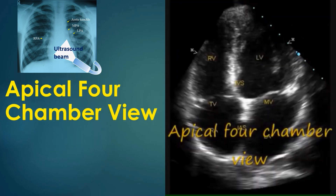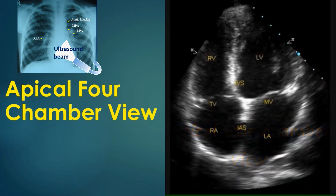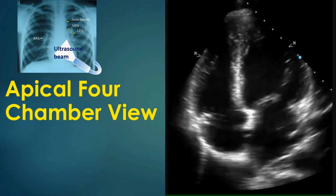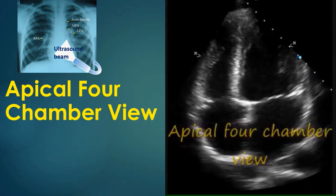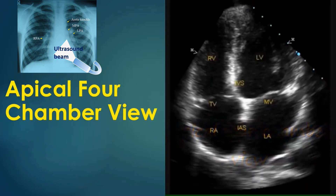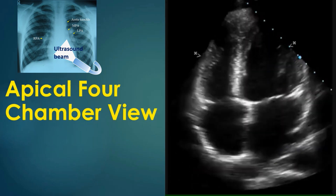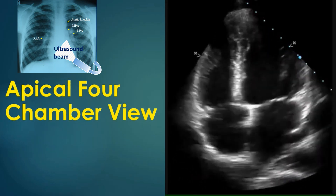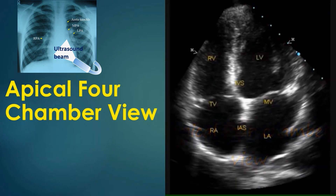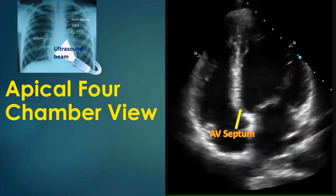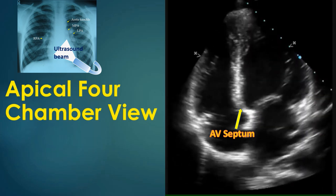Apical four-chamber view is obtained from the apex of the heart. It gives a good image of all four cardiac chambers as well as the mitral and tricuspid valves. The inter-atrial and interventricular septa are seen in this view. The tricuspid valve is attached more distally to the septum than the mitral valve, and the region in between is called the atrioventricular septum, which separates the left ventricle from the right atrium.